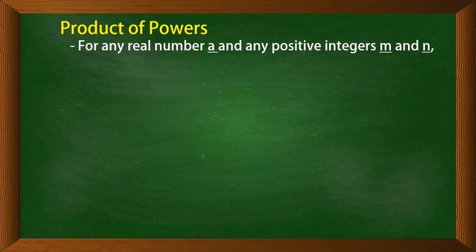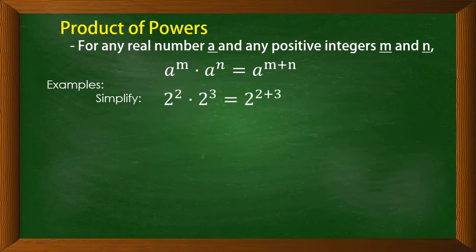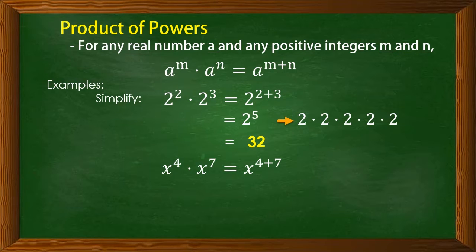The product of powers: for any real number a and any positive integers m and n, a raised to m times a raised to n is equal to — copy the base and then add the exponents: m plus n. For example, 2 times 2 times 2 times 2 times 2 times 2 equals 32. Another one: x raised to 4 times x raised to 7 is equal to x raised to 4 plus 7, or x raised to 11.